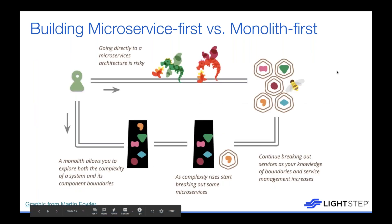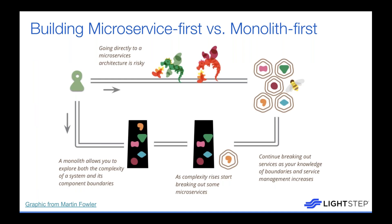Martin Fowler is a great source for many of these architectural decisions. It's interesting to look at his writing from seven years ago when microservices were a huge fad compared to modern thinking. We can say that going directly to a microservice architecture involves 'there be dragons,' whereas allowing a monolith to form first, understanding the complexity and boundaries within it, and then breaking it out into microservices might be a happier path.